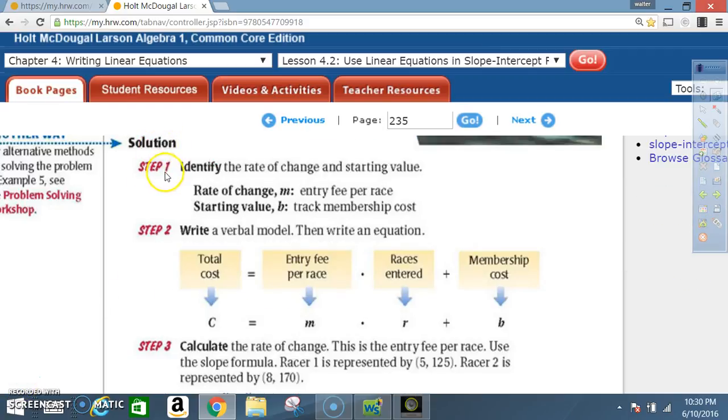Solution. Step 1. Identify the rate of change and starting value. Rate of change, M, is the entry fee per race. Starting value, B, is the track membership cost.